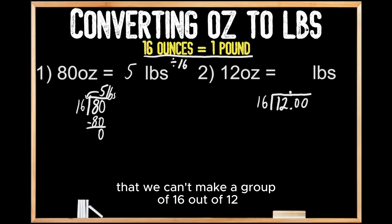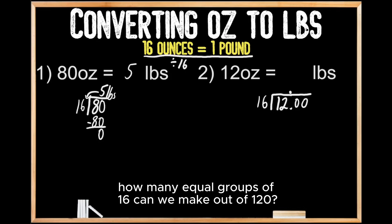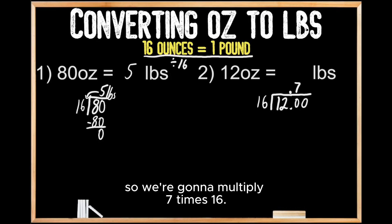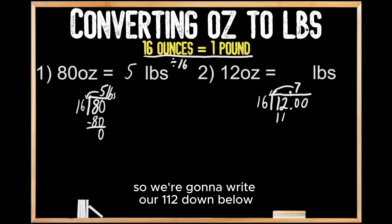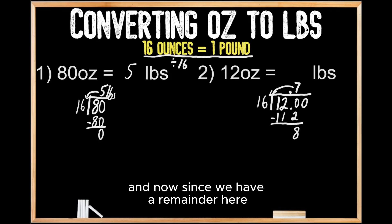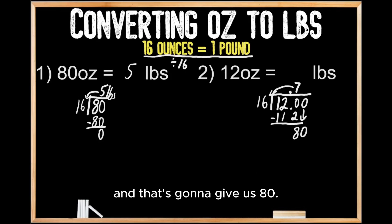Since we know that we can't make a group of 16 out of 12, we move from left to right and think: how many equal groups of 16 can we make out of 120? We know that we can make seven equal groups of 16 out of 120. So we multiply 7 times 16, which gives us 112. We write our 112 down below, and then we subtract 112 from 120, which leaves us with 8. Since we have a remainder we can't stop, so we bring down the digit immediately to the right, giving us 80.